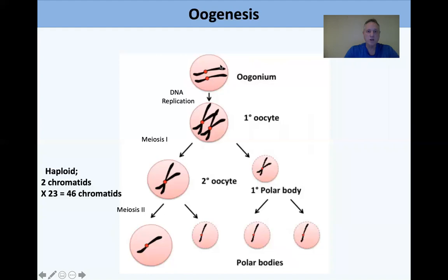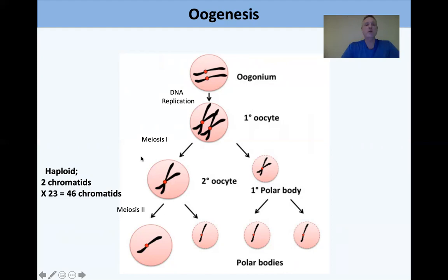In oogenesis, the oogonium is diploid and replicates to make a primary oocyte. As we saw before, there are two sister chromatids held together by a common centromere. In meiosis one, an asymmetric division occurs such that the secondary oocyte takes the lion's share of the cytoplasm. The secondary oocyte is haploid and has two chromatids times 23 equals 46 total chromatids. There's also a small primary polar body with very little cytoplasm that won't be viable.